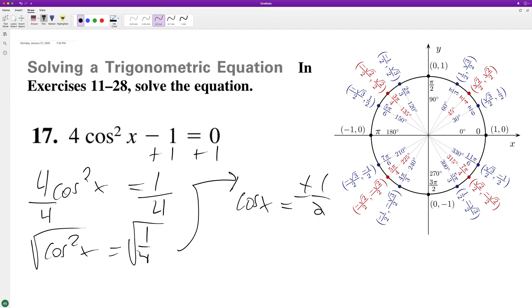Now we need to figure out where cosine of x equals plus or minus one half. Cosine is the x component, so it's going to be pi over three, two pi over three, four pi over three, and five pi over three.